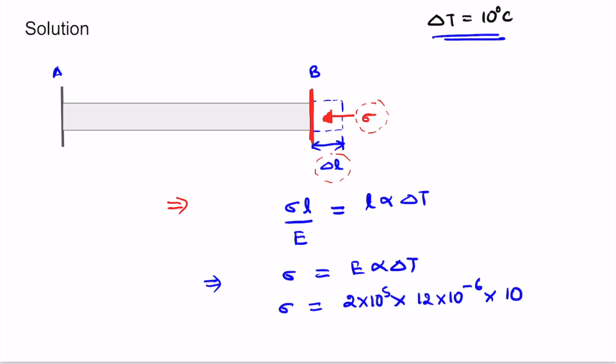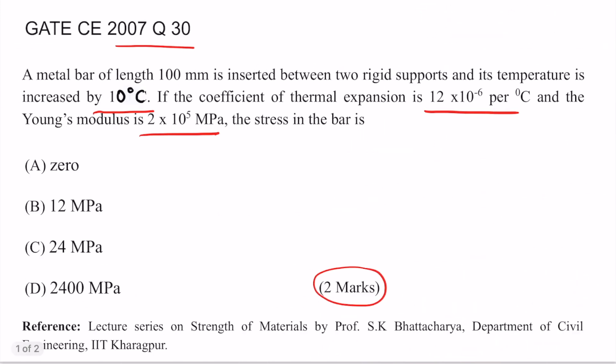So σ comes out to be 24 MPa. This is the value of stress we are getting due to the increase in temperature by 10 degrees Celsius. From the options we can see, the correct answer is option number C, which is 24 MPa.